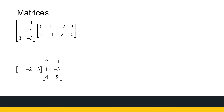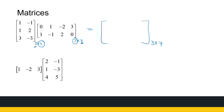Firstly, we said the size is important, so do yourself a favor and write the size down: three by two and two by four. We can multiply the matrices if the number of columns of the first one is the same as the number of rows of the second one. So this product does exist. The resultant matrix is three by four — three rows, four columns.